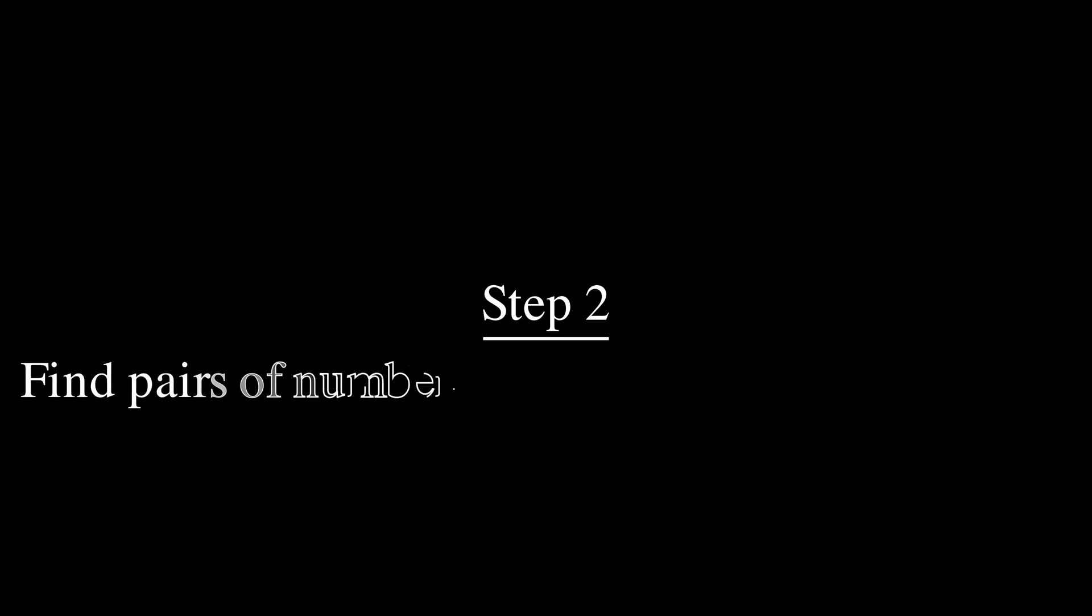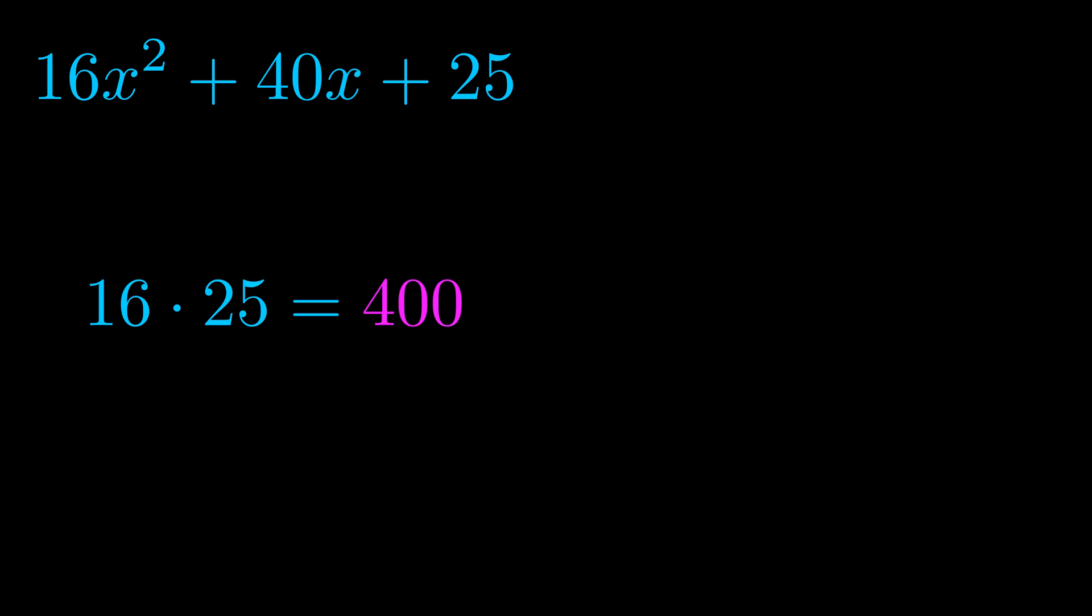Step two is to try to find all of the pairs which multiply to this number. Now it turns out you don't really need to find all of them but go ahead and write down as many numbers as you can that multiply to the magenta value for now.